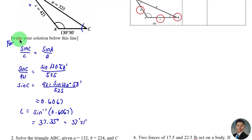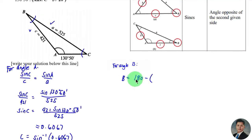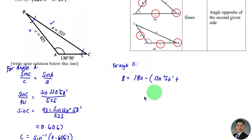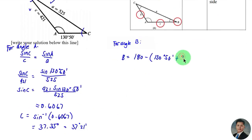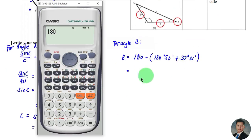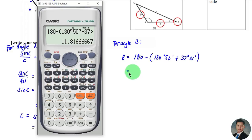Next, we solve for angle B. We subtract angles A and C from 180 degrees: 180 − (130 degrees 50 minutes + 37 degrees 31 minutes), which equals approximately 11.82 degrees, or 11 degrees 49 minutes.